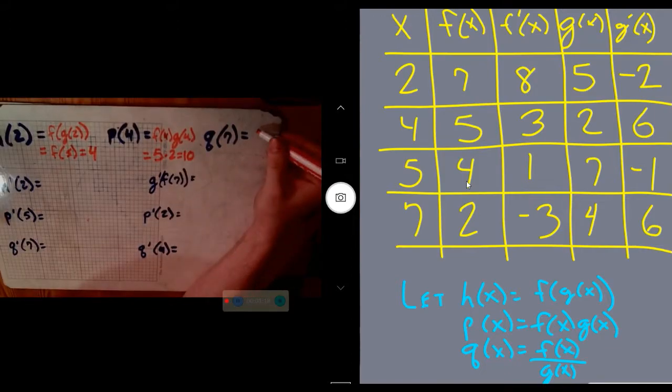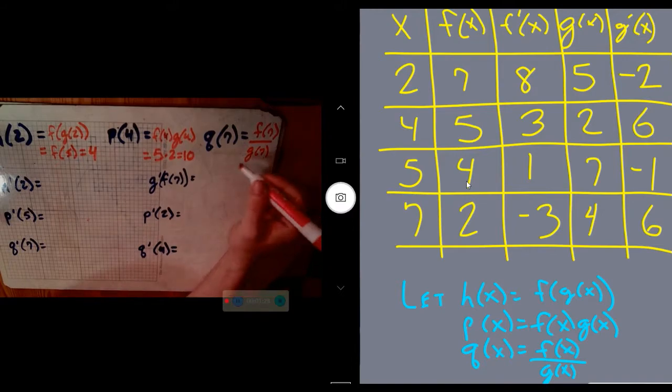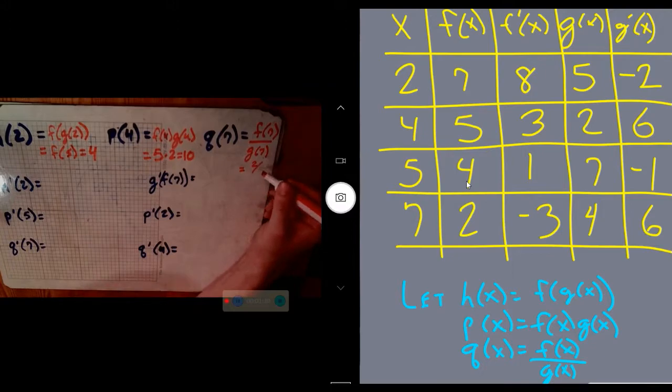The quotient here, same idea. We can do f(7) divided by g(7) because that's how they have it defined. So f(7) divided by g(7): f(7) is 2, g(7) is 4, so 2 over 4, or 1 half.